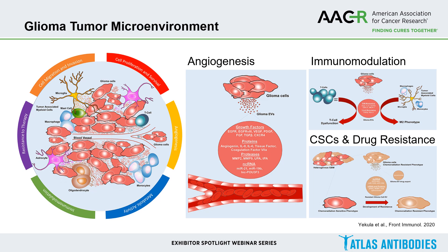Current approaches are now focused on the glioma tumor microenvironment. It has become clear that there are six mechanisms that regulate the glioblastoma tumor microenvironment, many of which are interdependent and carry specific molecular signatures. Of these six mechanisms, four principles have emerged as paramount to our understanding of various gliomas and are crucial for new treatment strategies: angiogenesis, immunomodulation, cancer stem cells, and drug resistance.